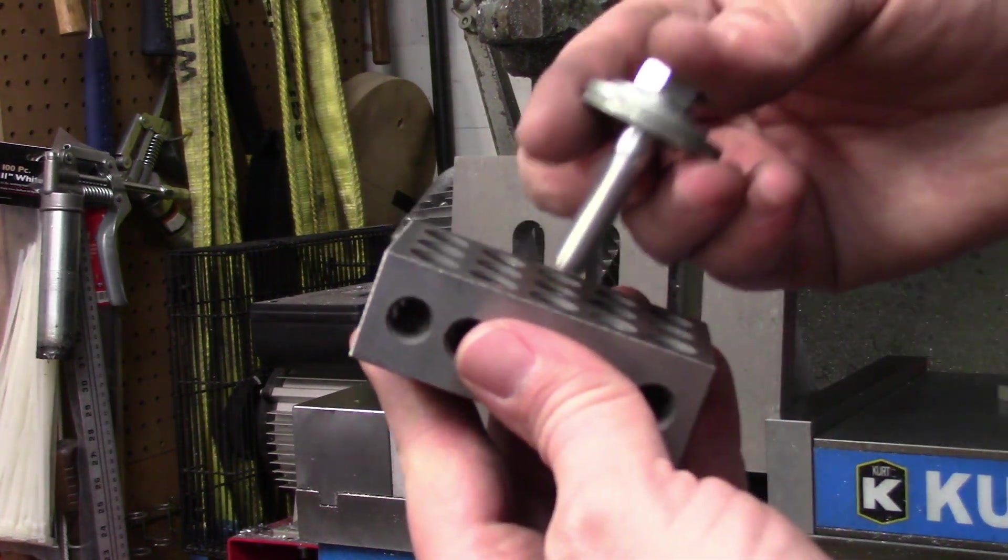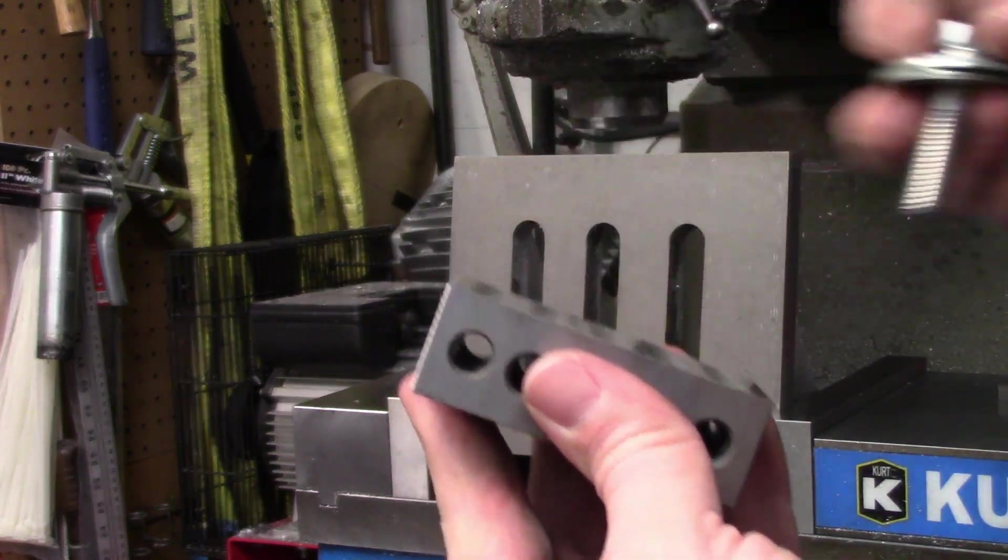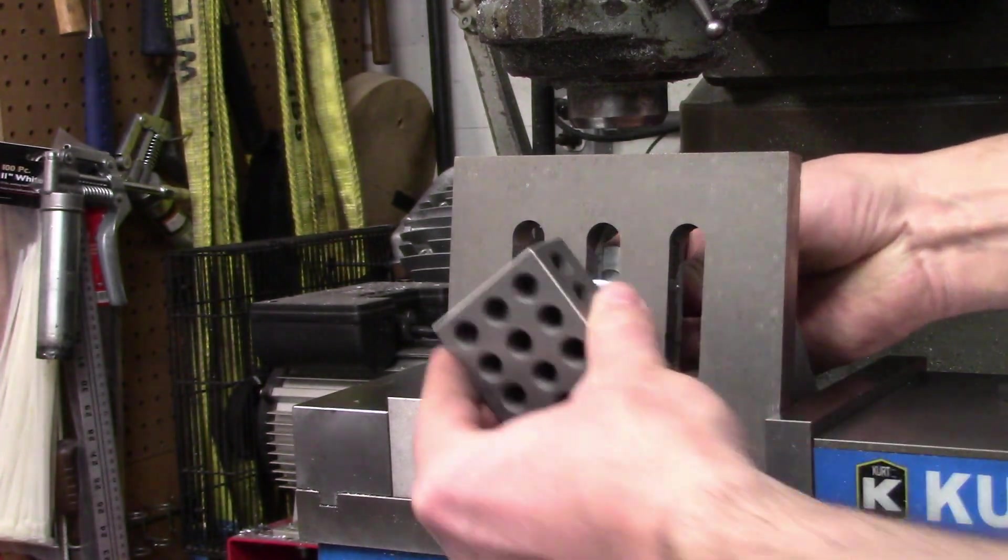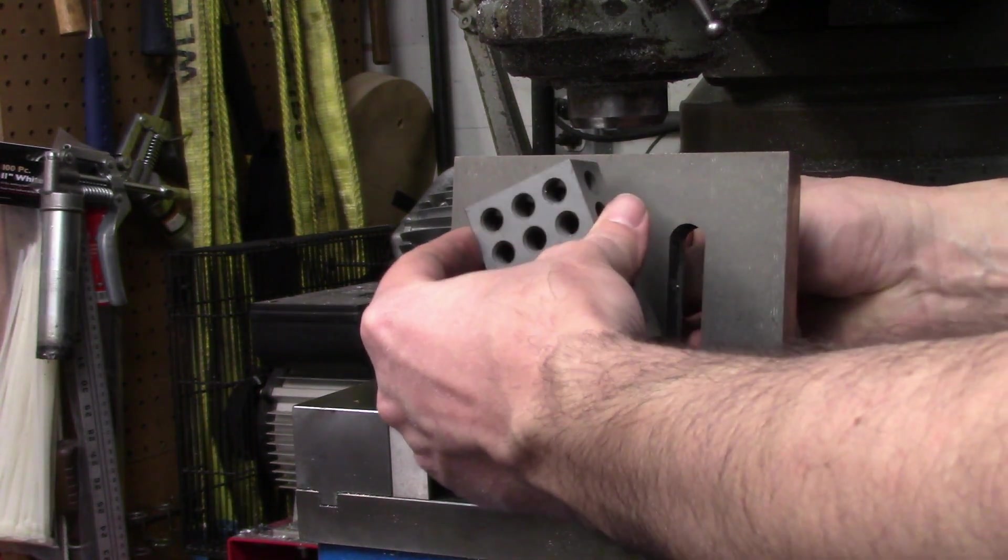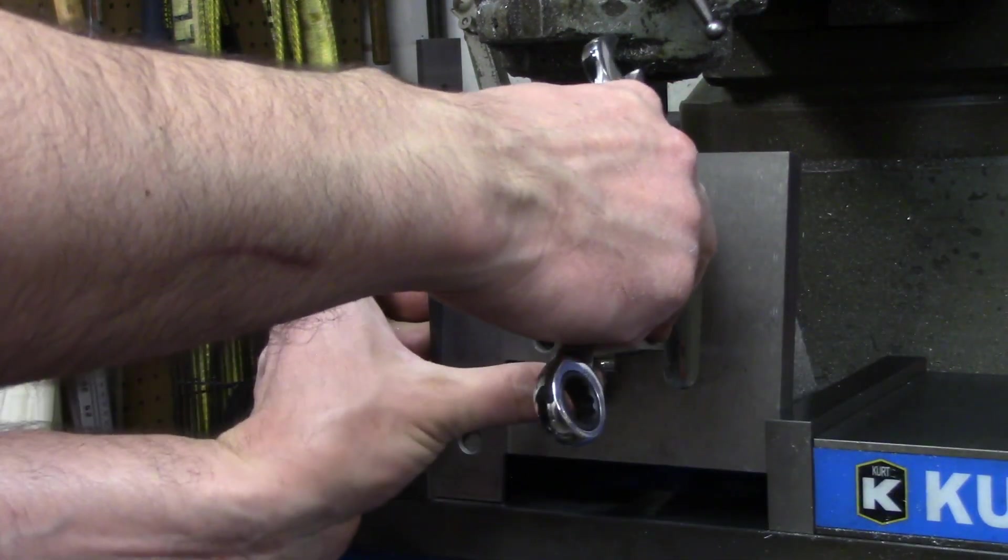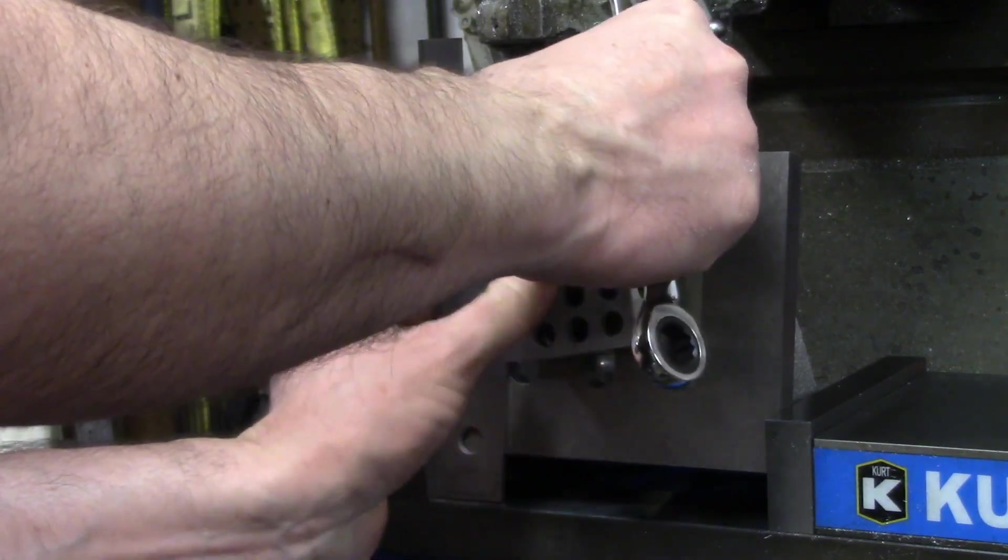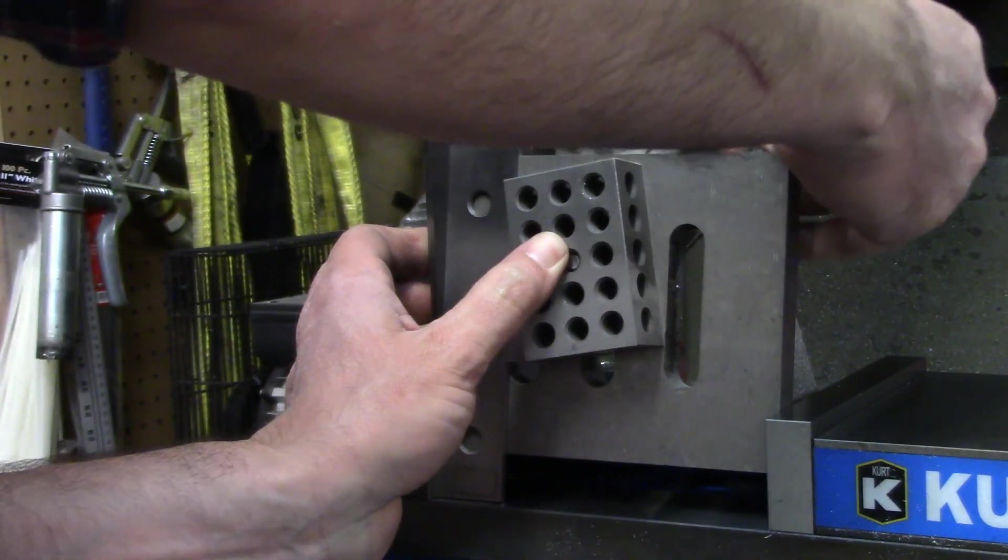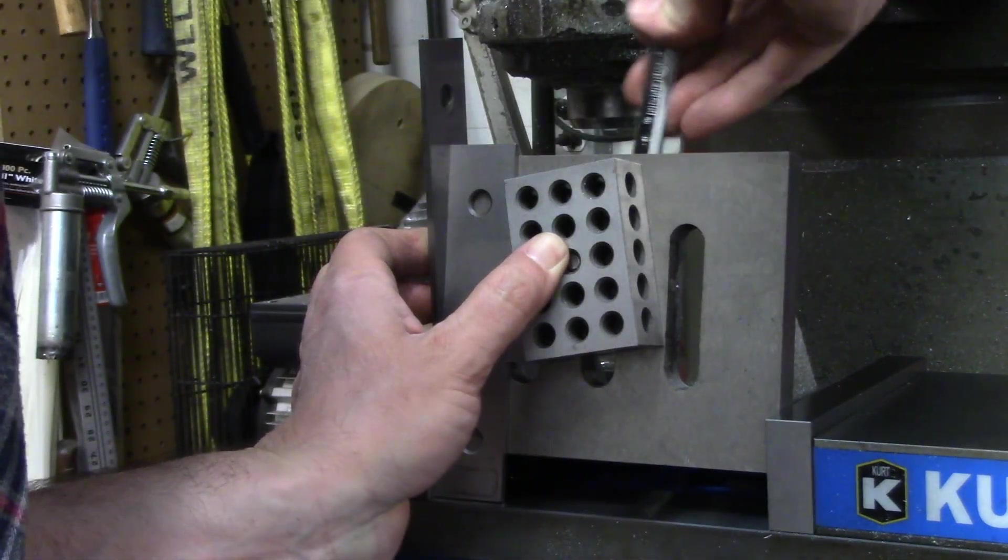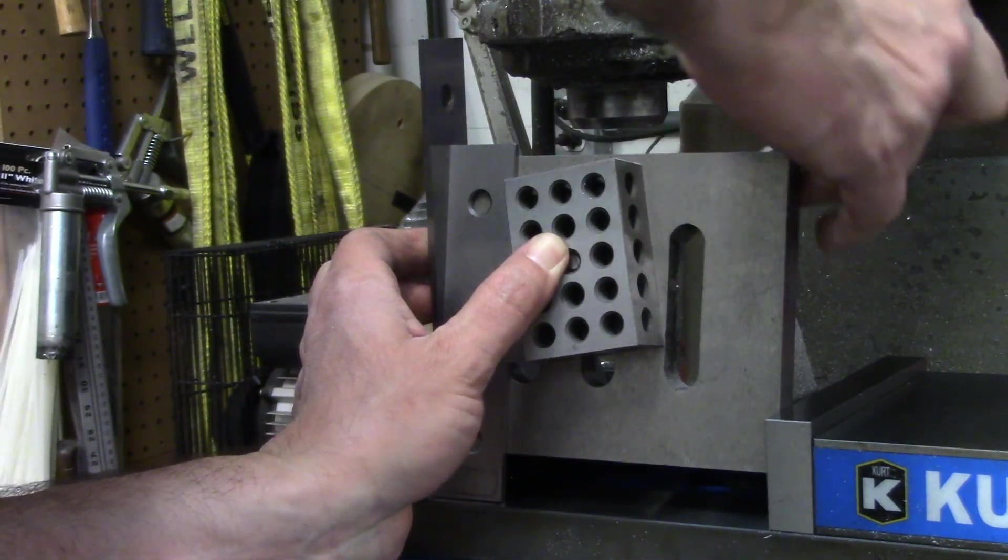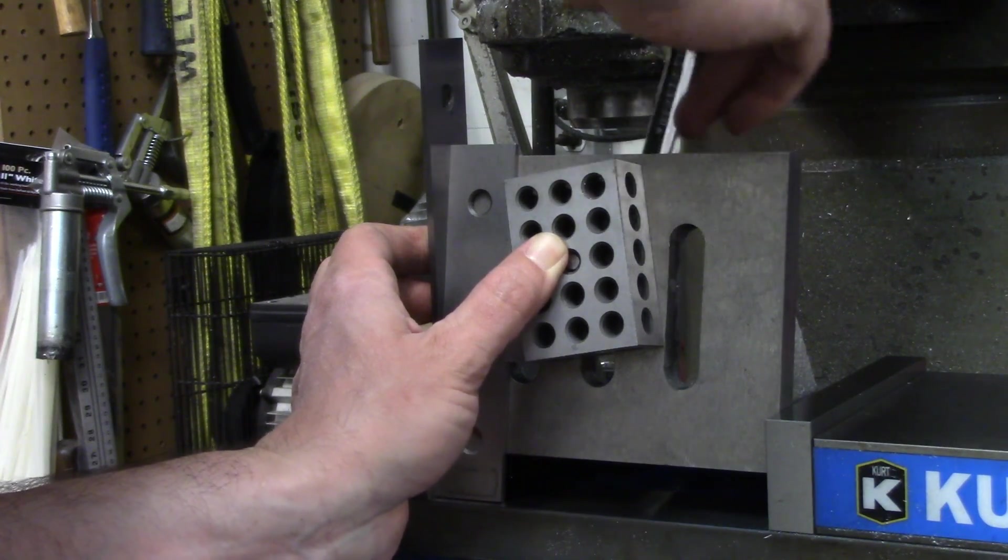For the second half of the compound angle, I'm mounting a one-two-three block to the angle plate by bolting it on using one of the threaded holes in the block. This is held on at a ten degree angle from the side, again using an angle block, as well as a couple of parallels to act as a spacer and a fence. This part of the setup was definitely a challenge with only two hands, but I got it after a few tries.